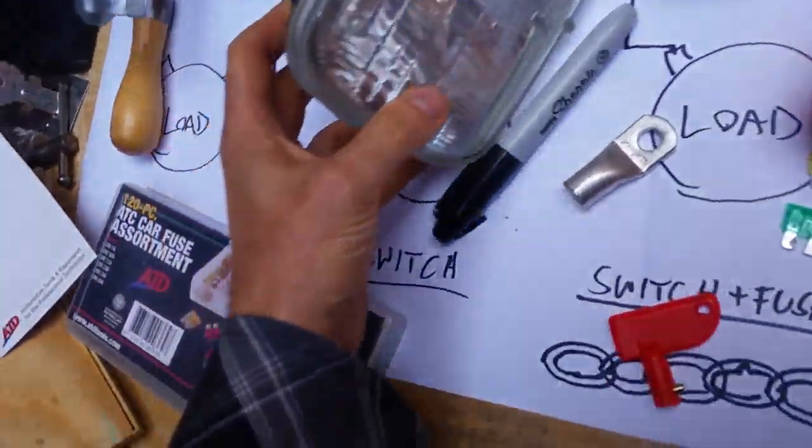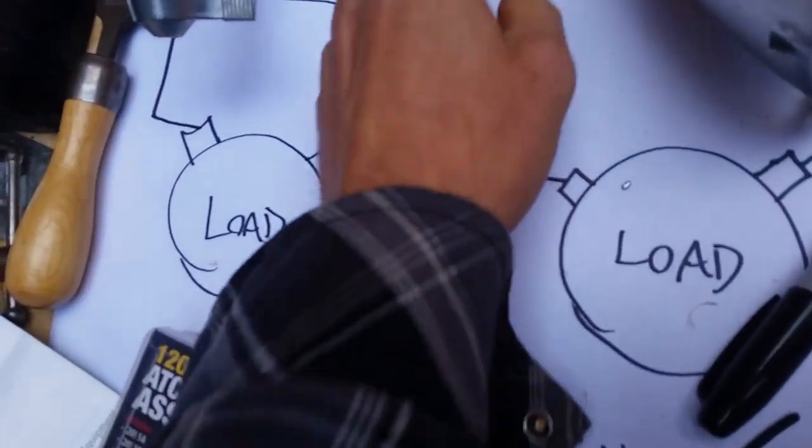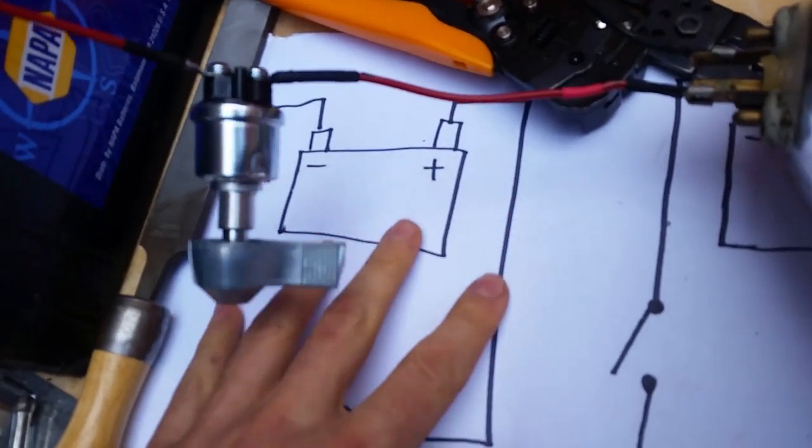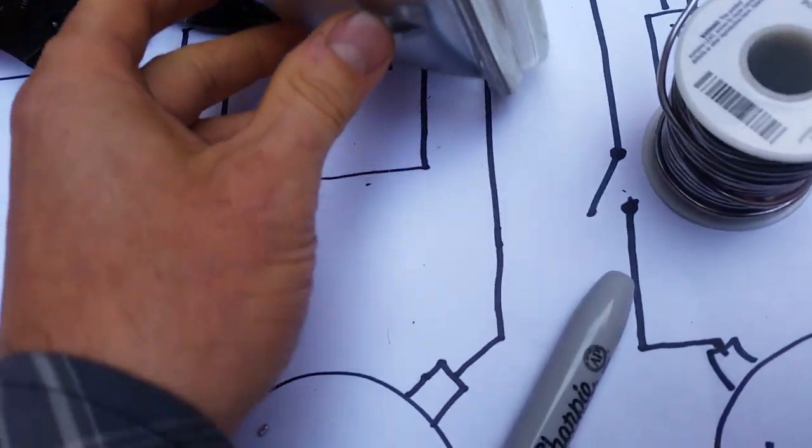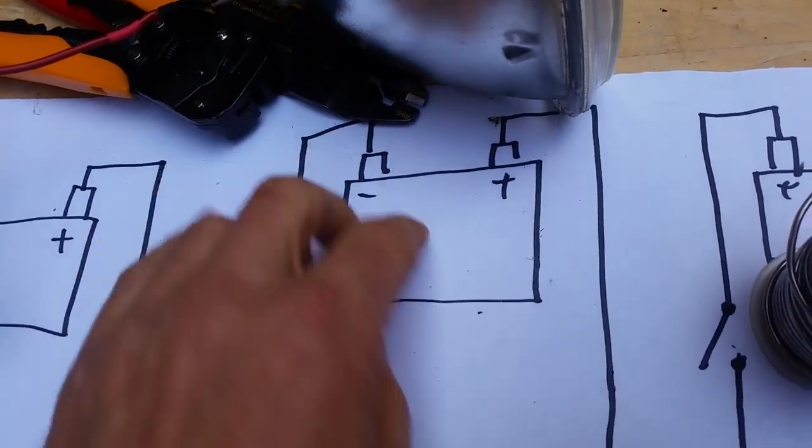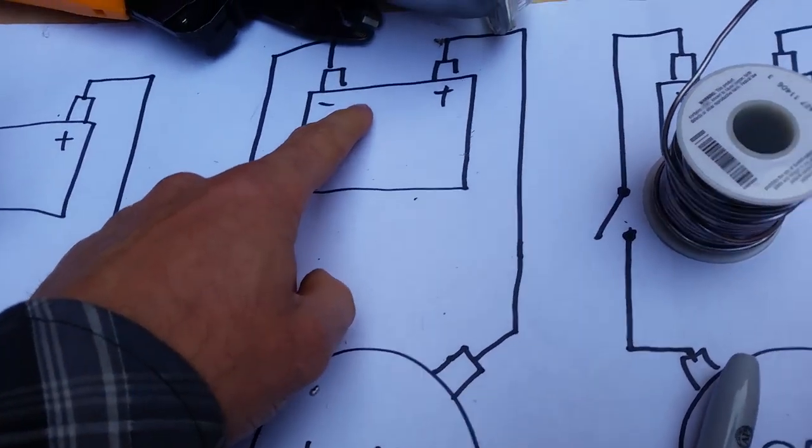All right, as you know, look at this mess. As you know, this was our first circuit with two wires. Our second circuit was two wires and a switch. Here's the load, here's the battery.